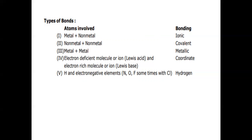Then one more type of bond is weak bond. In weak bonds, we have two types: one is van der Waals interaction, and another one is hydrogen bond. We can expect hydrogen bond only when hydrogen is directly attached to more electronegative elements like fluorine, nitrogen, oxygen, and in rare cases with chlorine also.